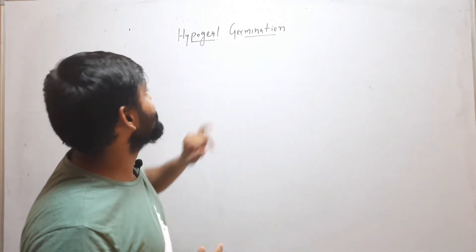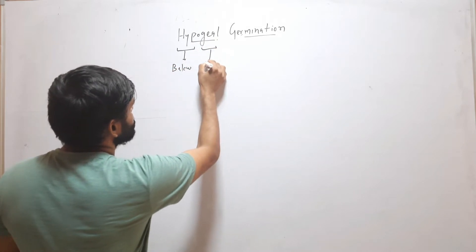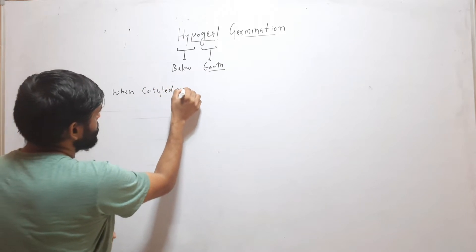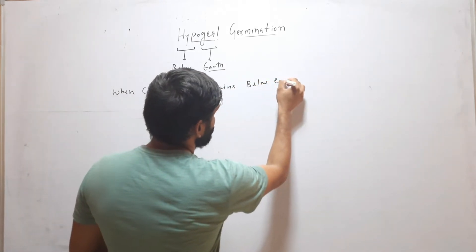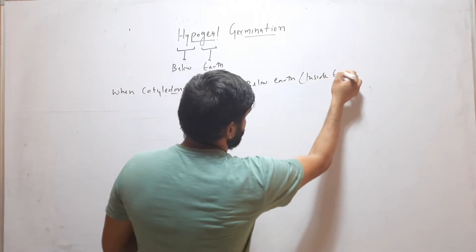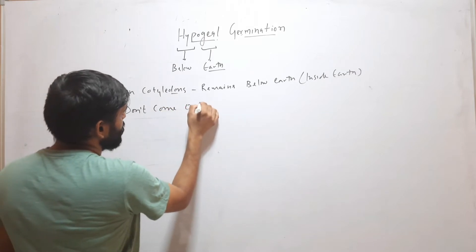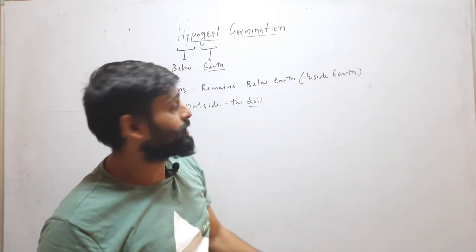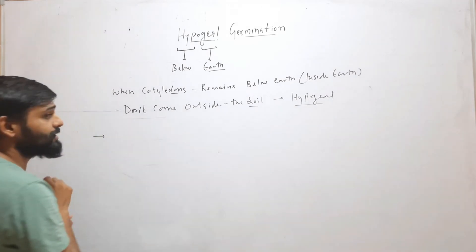Hello friends, welcome to my YouTube channel. In this video we will discuss hypogeal germination. 'Hypo' means below, 'geal' means earth. So when cotyledons remain below the earth — when they do not come outside the soil — this type of germination is called hypogeal germination.